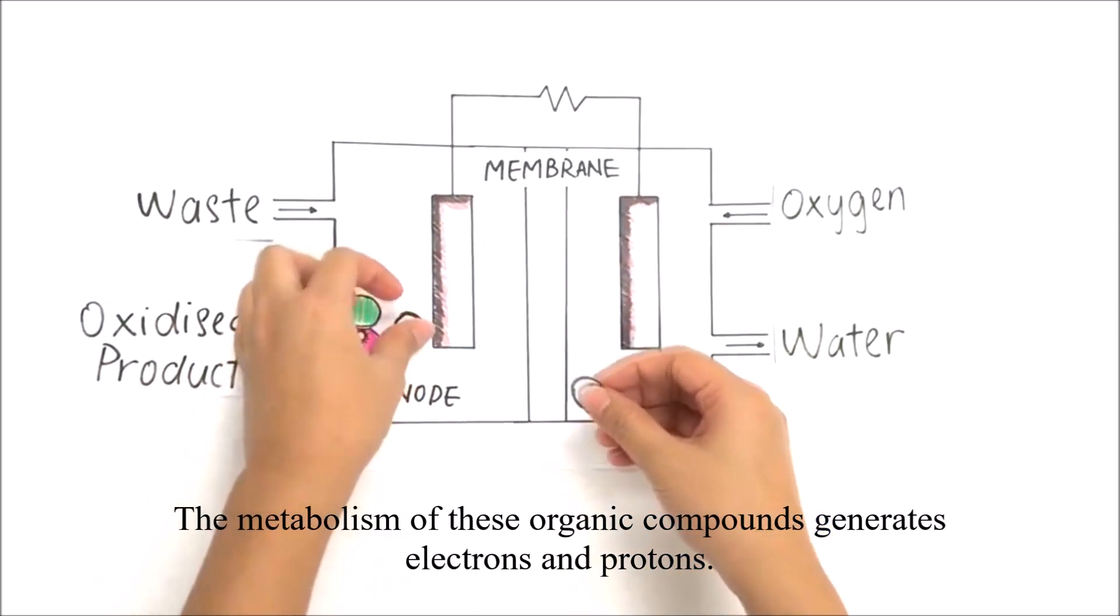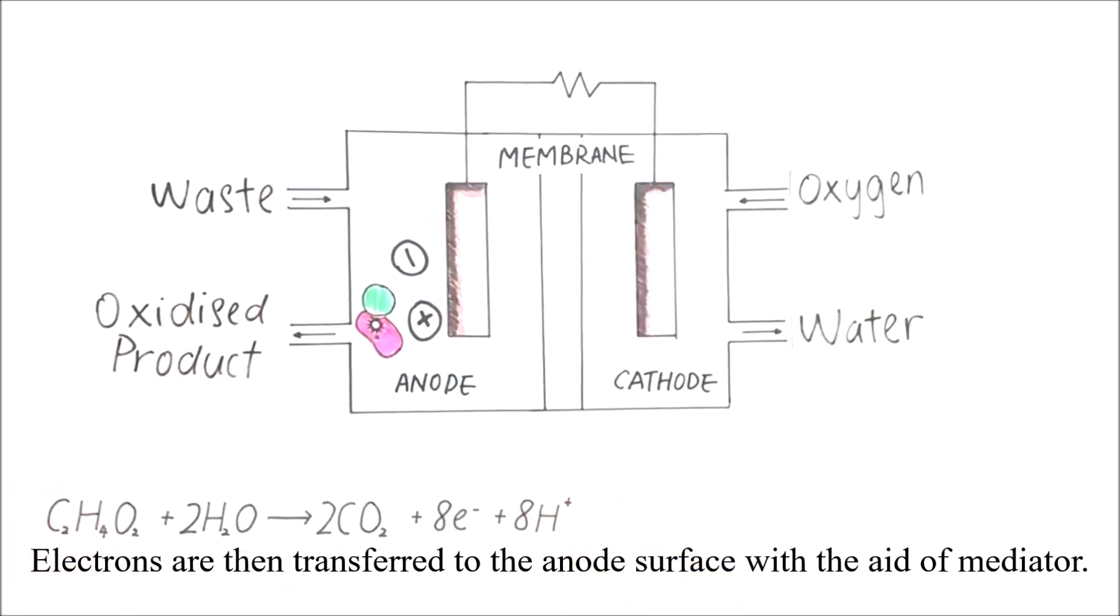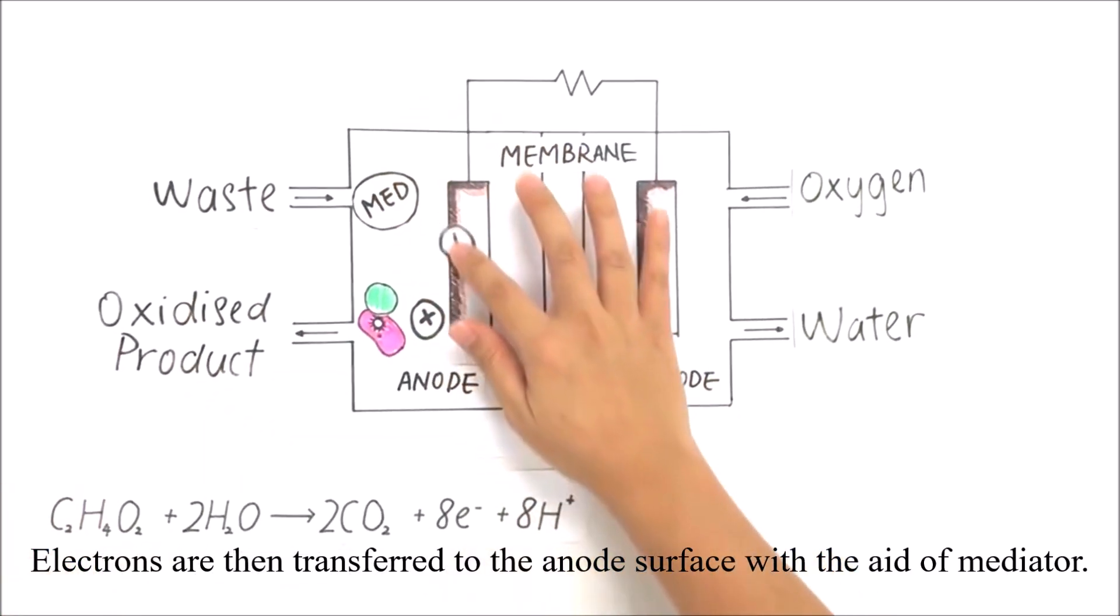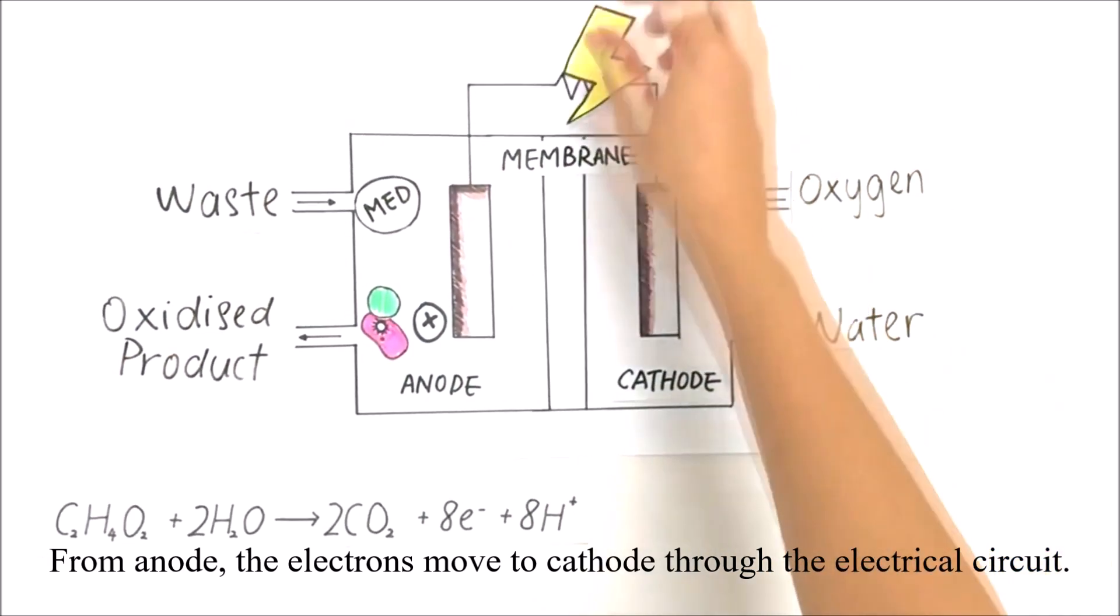The metabolism of these organic compounds generates electrons and protons. Electrons are then transferred to the anode surface with the aid of mediator. From anode, the electrons move to cathode through the electrical circuit.